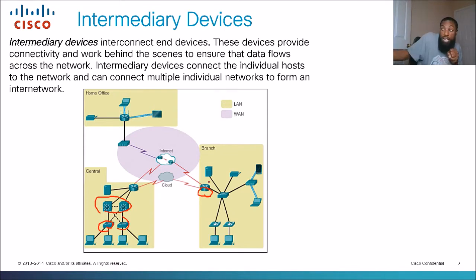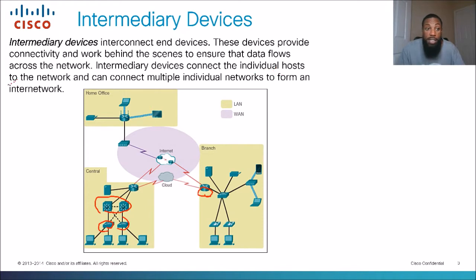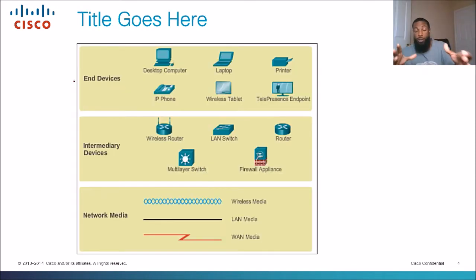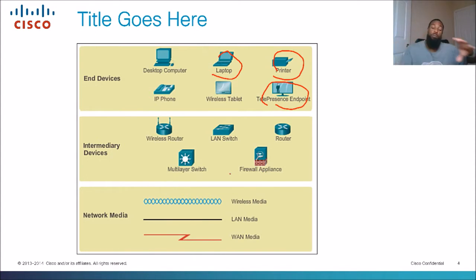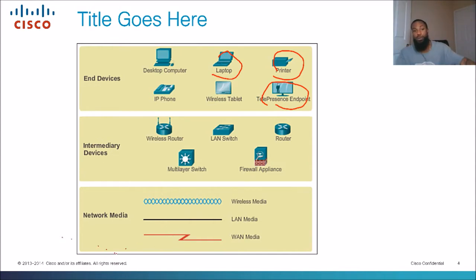An intermediary is like a third party — it sits between the end device and the internet. Intermediary devices connect individual hosts to the network and can connect multiple individual networks to form an internet network. Here's another graphic that separates all of those. We have our end devices: the desktop PC, the laptop, the printer, and telepresence endpoint — basically like a video phone. We have our intermediary devices: the wireless router, the LAN switch, the router, firewall appliance, etc. And the media that connects them — like wires, radio signals, LAN and WAN media, ethernet cables — those are considered network media. This connects the intermediary devices to the end devices and forms our internet network.